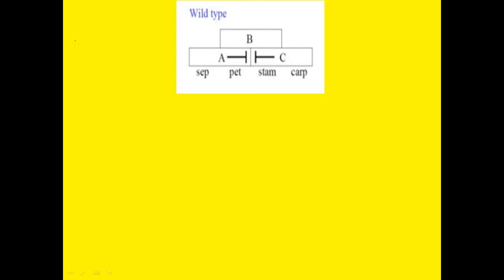One important thing: A and C are both dominant but also antagonistic to each other. In those whorls where A is expressed, C will not be expressed, and where C is expressed, A will not be expressed. So A inhibits the expression of C in the first two whorls — sepal and petal — while C inhibits the expression of A in whorls 3 and 4.